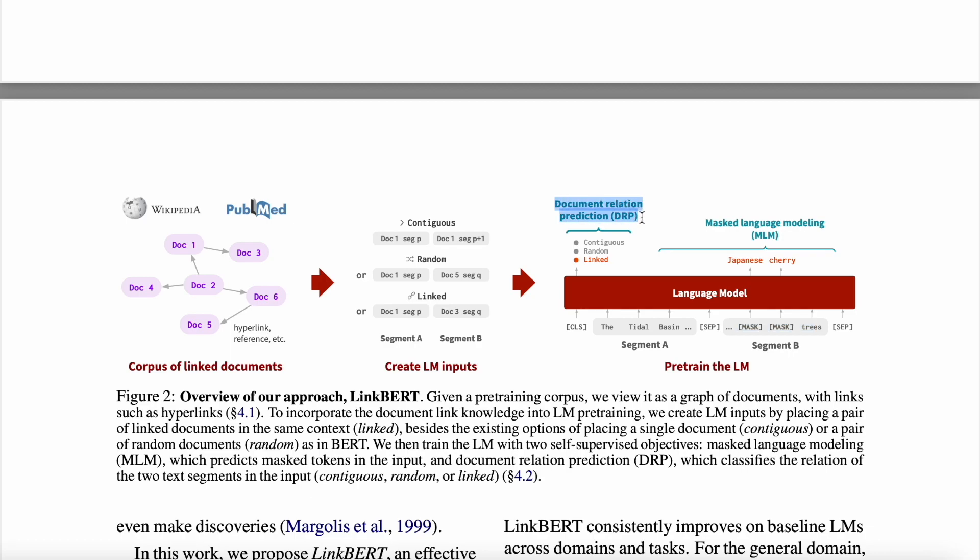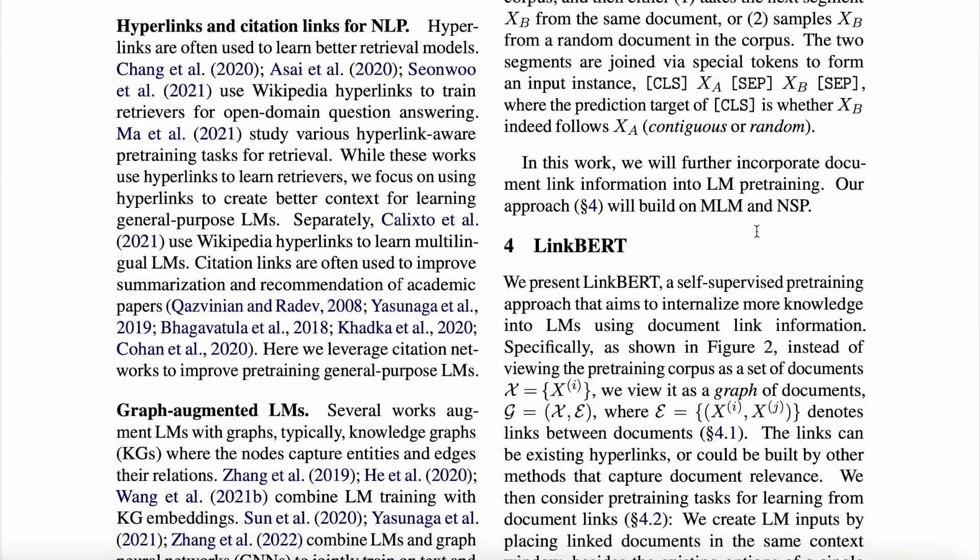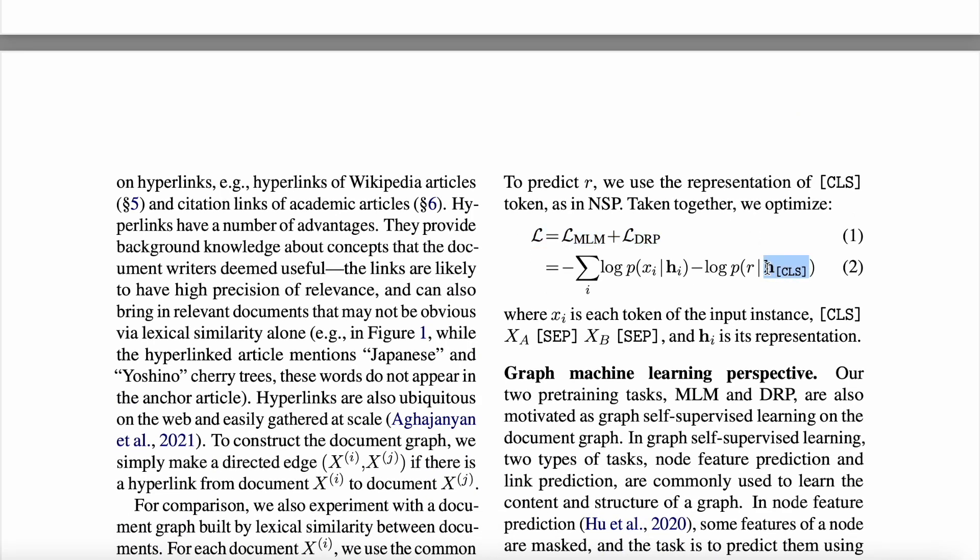The second one is what they rename as Document Relation Prediction (DRP), because now we want to know whether these two segments of text are coming from linked documents, or are these random, or are these from the same document but in a contiguous sequence. So now the loss function would have two components: one coming from DRP, another coming from MLM. So this is how it looks like. For DRP, given the hidden representation of the CLS token, we want to predict which class do we lie in out of all those three classes, and we want to maximize this probability. And for MLM, we get the hidden representation of the i-th masked token and we want to know what is the actual word over there, where xi essentially iterates over all the words in the vocabulary. So yeah, this is how the entire objective works which we are trying to optimize.